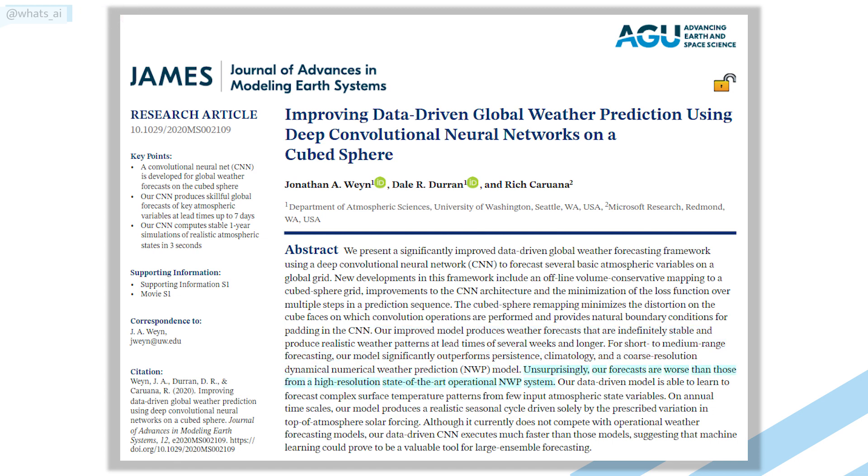But as they say, it currently does not compete with current operational weather forecasting systems in numerical weather prediction. But this data-driven CNN is much faster and is always improving, showing that machine learning is definitely a valuable tool in weather forecasting and could eventually replace current approaches, giving both faster and more accurate predictions.